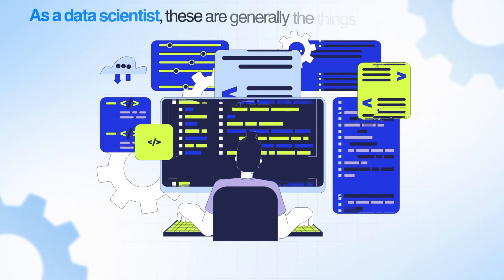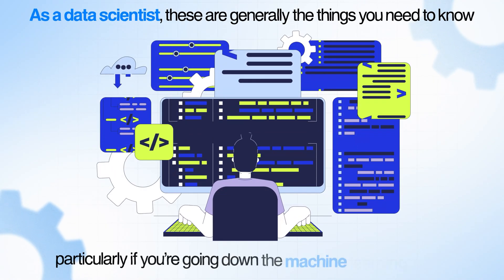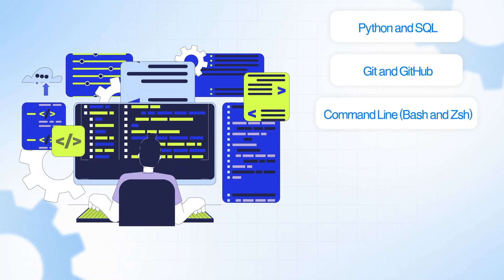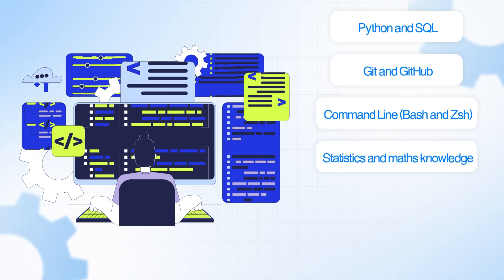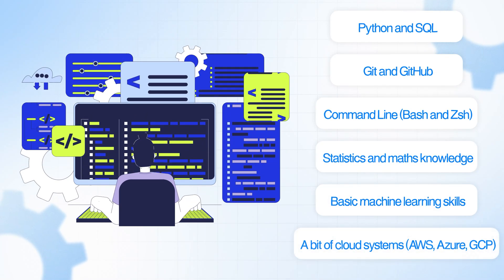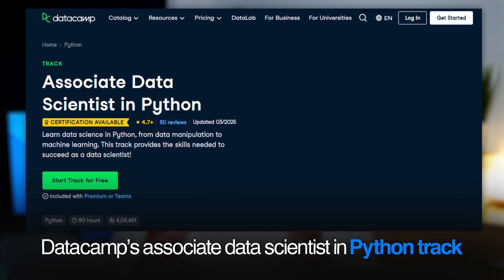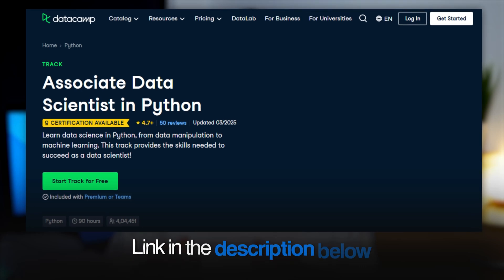As a data scientist, these are generally the things you need to know, particularly if you're going down the machine learning route: Python and SQL, Git and GitHub, command line tools like Bash and Z shell, statistics and maths knowledge, basic machine learning skills, and a bit of cloud systems like AWS, Azure, and GCP. The data scientist role varies so much across the industry that you may need certain skills at one company which aren't required at another. If you're looking for a roadmap, I really recommend DataCamp's Associate Data Scientist with Python Track — it's linked in the description below.